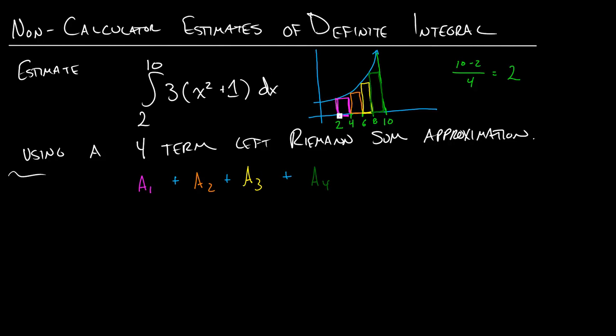So the base and height of the pink rectangle are 2 times - that's the base - and then f of 2, which is I just plug in 2 here: 3 times 2 squared plus 1. Now we're going to add that to the area of my orange rectangle, which is going to be base, which is 2, and then times my height. I don't plug in 2 now, I plug in 4 into my function, because this is the height that I'm using. So I'll have 3 times 4 squared plus 1.